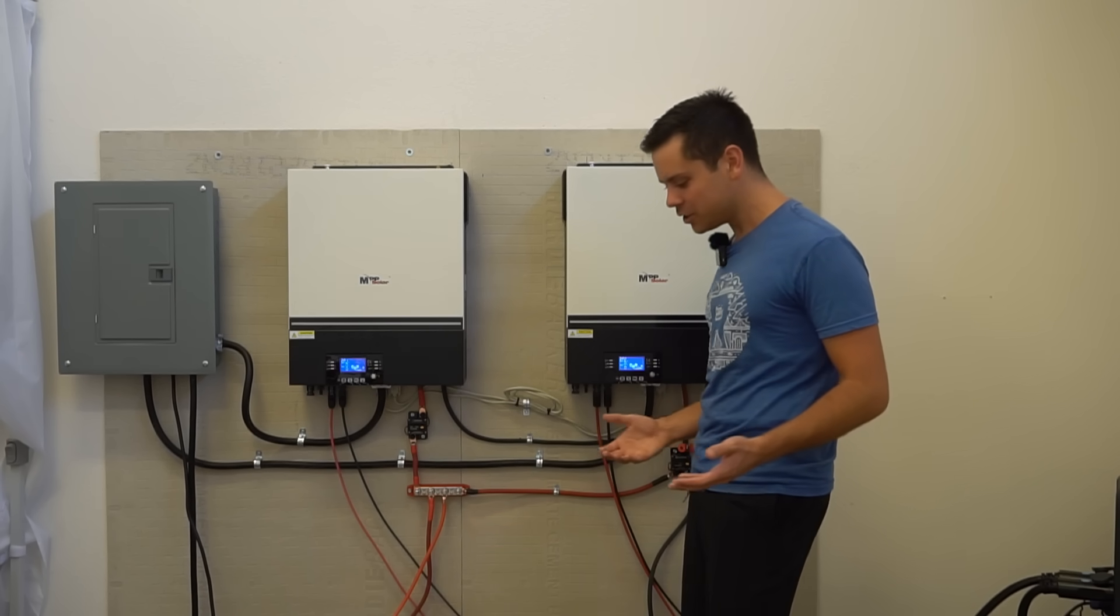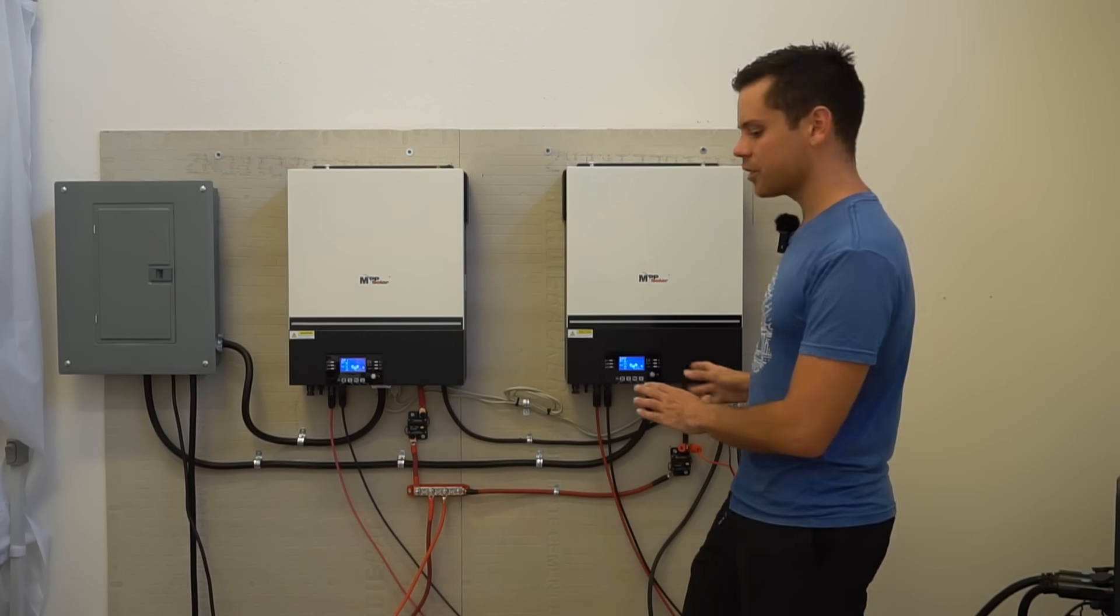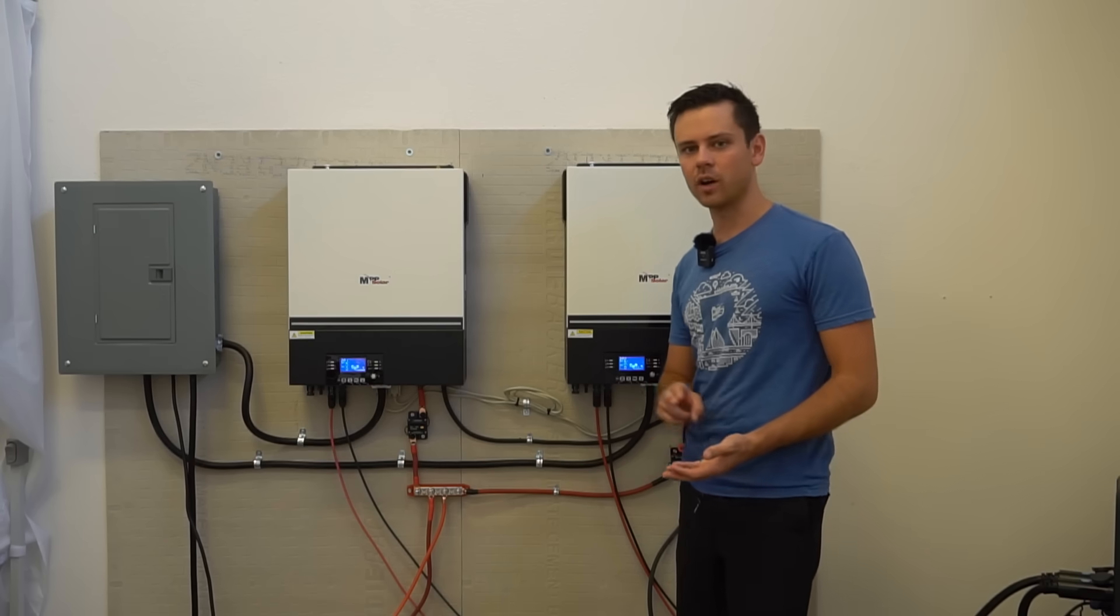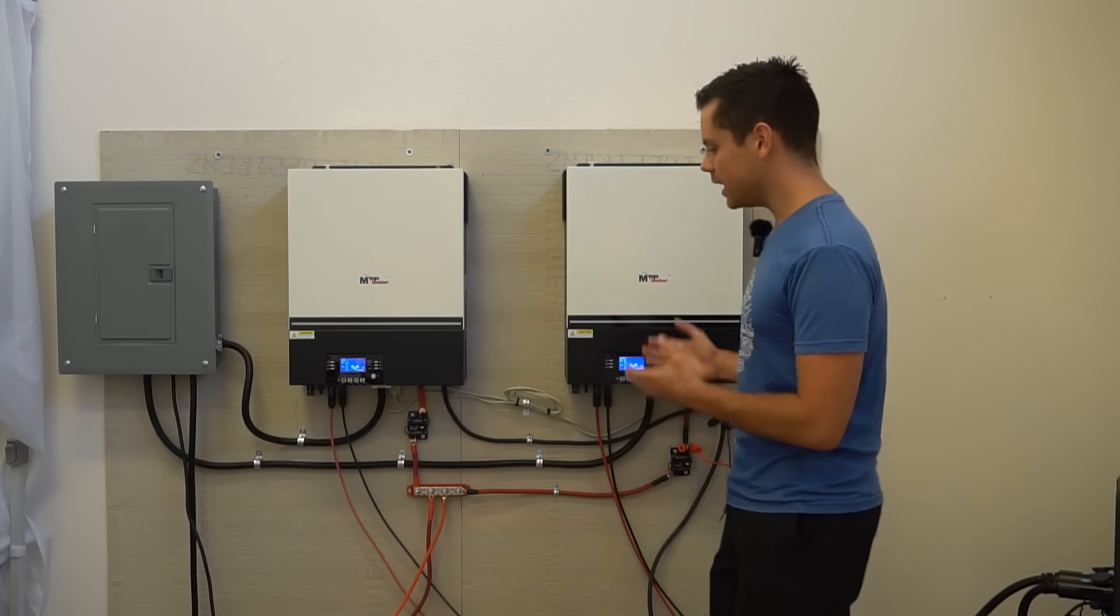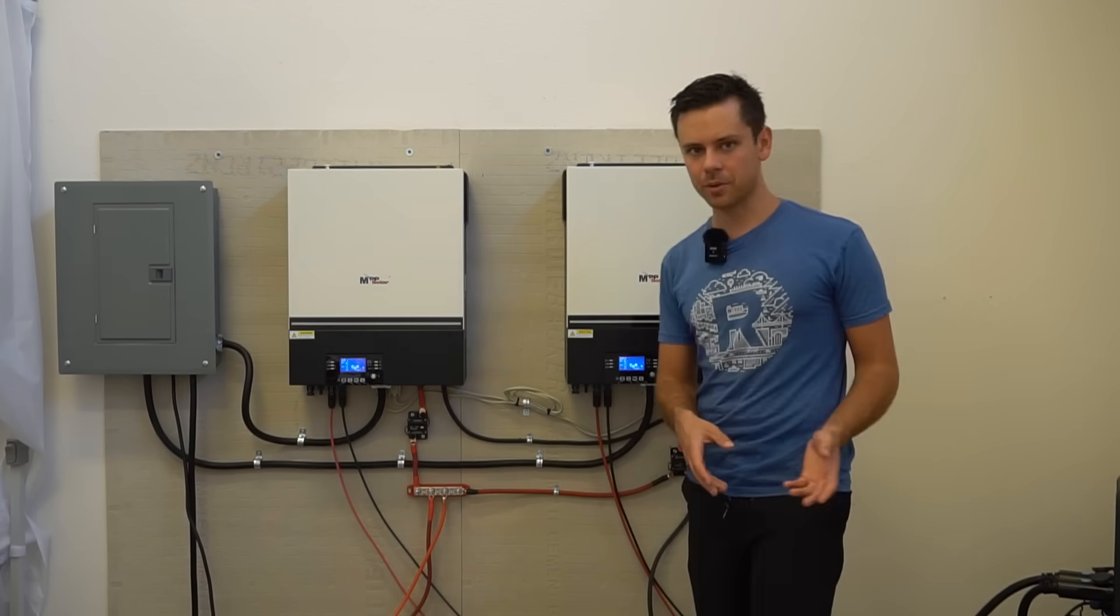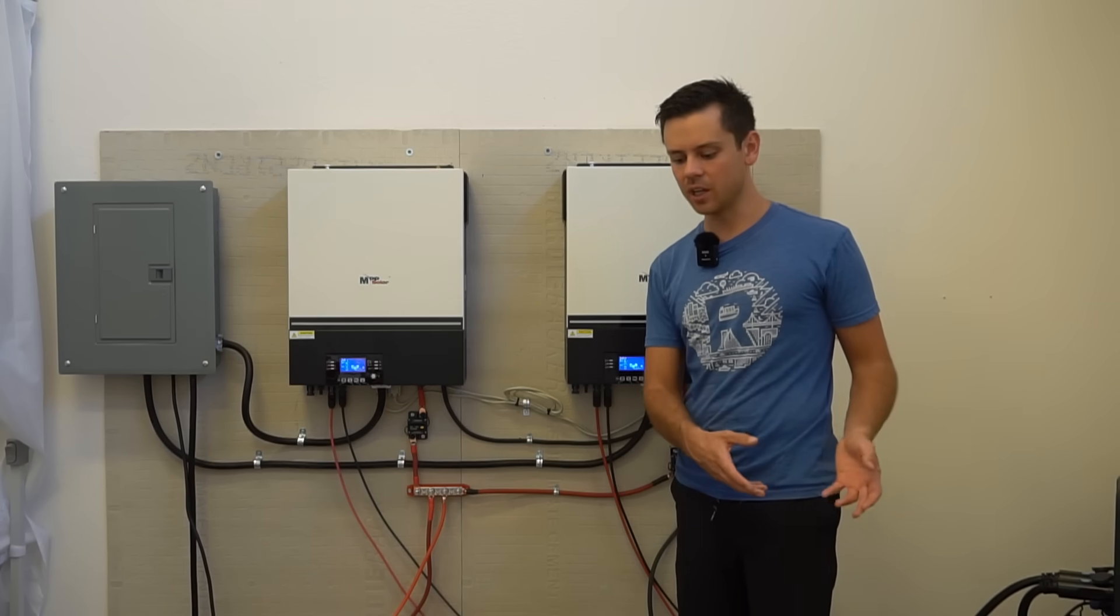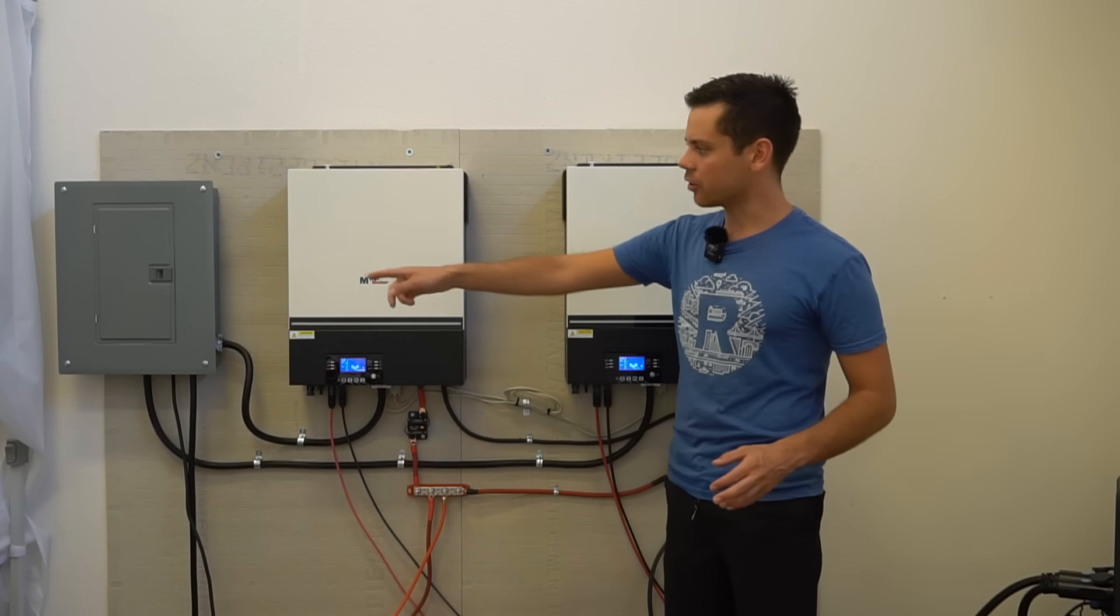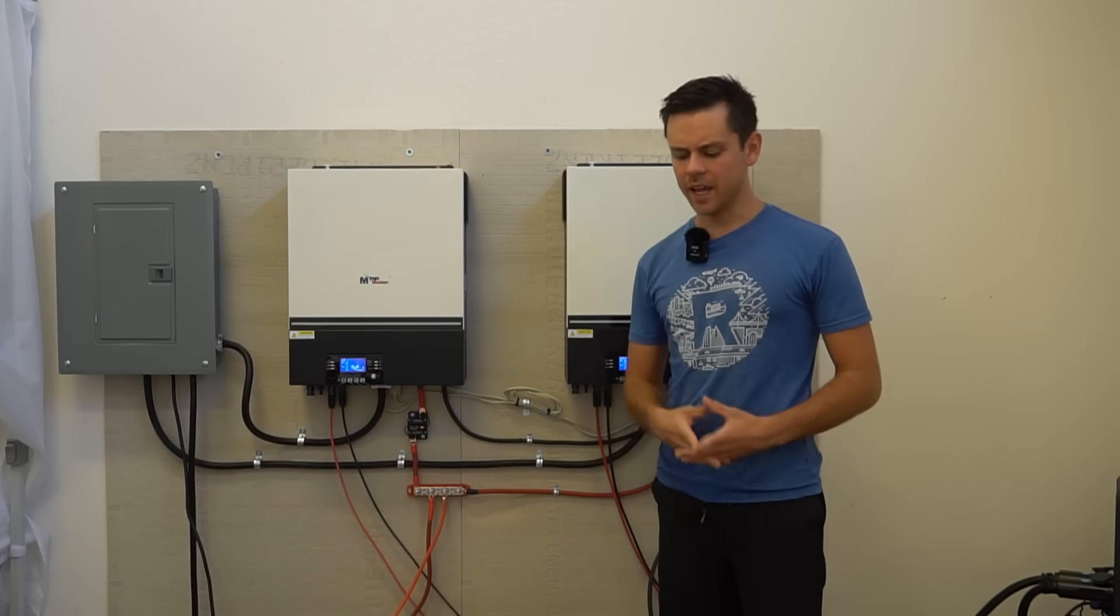And I understand why in other instances we ground or we want a true earth ground. But in this instance, having a true earth ground on the AC input and having a surge protection device on the PV input makes perfect sense. But creating a ground loop does not. And that's all I have to say.